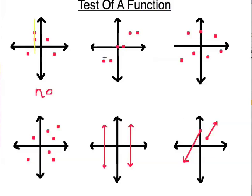Next one — I can't make this one fail the vertical line test. Passes the test, passes the test. Even over here it passes because it's not passing through more than one point, even though it's not passing through any points at all. That doesn't matter. No matter where I draw this line, it's not going to pass through more than one point. So yes, it's a function.